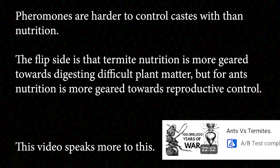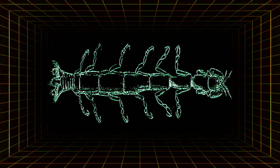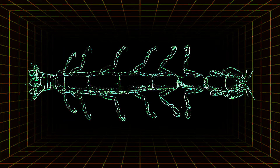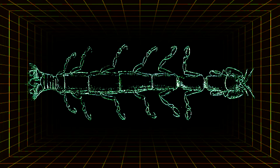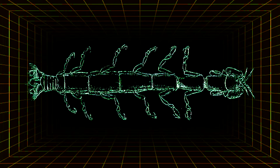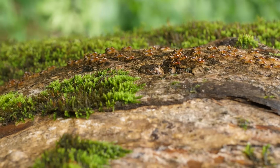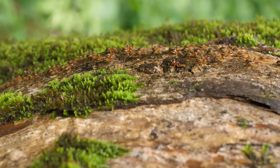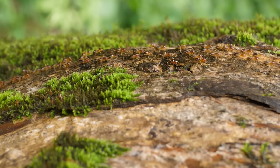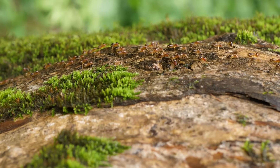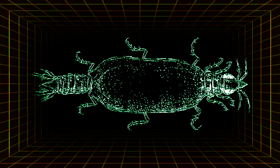In termites, the caste differentiation process is influenced by environmental cues and chemical signals, mainly through hormones. The young or nymphs, when exposed to specific hormones or pheromones, will develop into either workers, soldiers, or reproductive individuals. For example, if the colony is under stress or there is a lack of workers, some workers may develop into new reproductive individuals to ensure the survival of the colony.